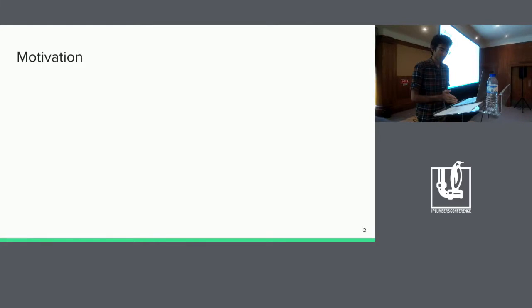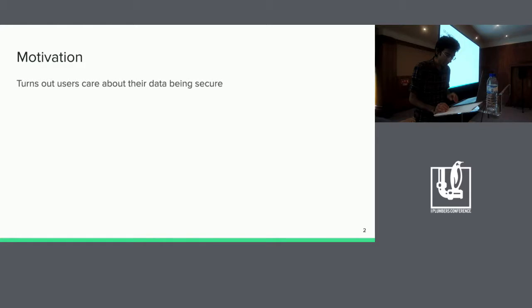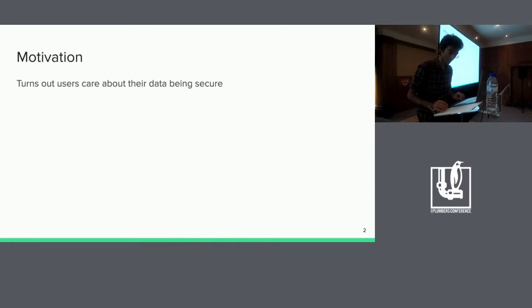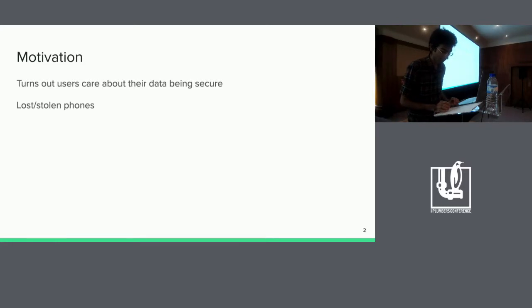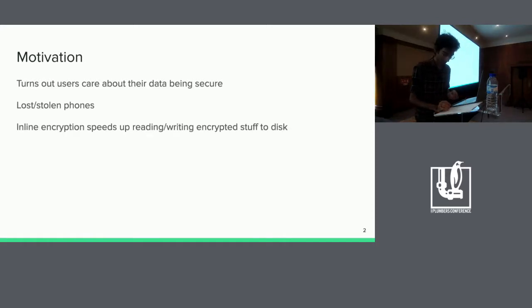So, motivation. Why do we want to do inline encryption support in the kernel? Well, let's start at why do we want to do encryption at all? Because it turns out our users want their data to be secure and private. We want to make sure that if you lose your phone or it's stolen, someone else can't just go through all your bank passwords and your large secret collection of cat videos. So one way to protect our users' data on Android is by encrypting their data before storing it. And inline encryption is a way of speeding up this encryption.